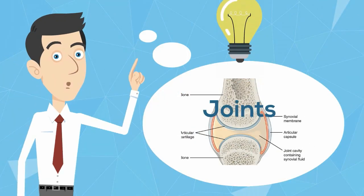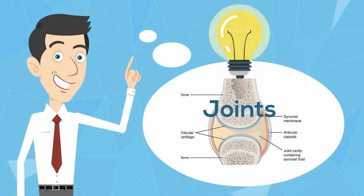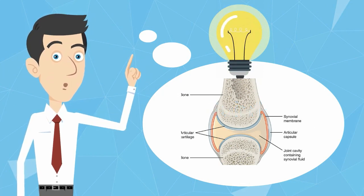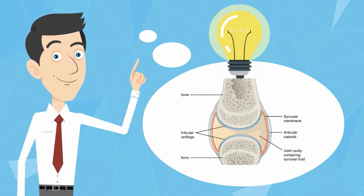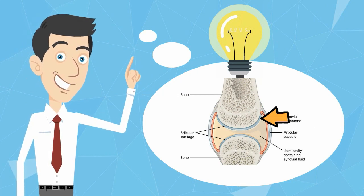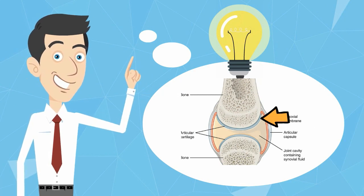Joints are where bones come together. A synovial joint is unique because the bones have cartilage at the end, they are attached by the ligaments, and there is a space in between the two bones filled with a fluid called synovial fluid which acts as a cushioning agent.